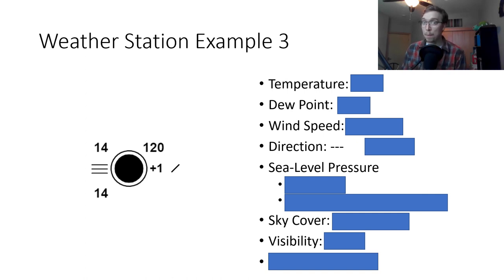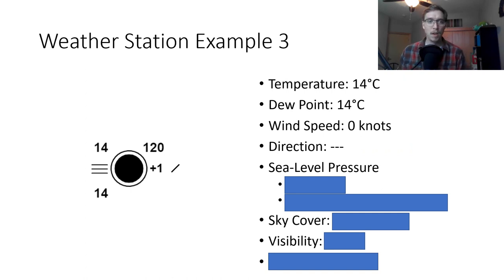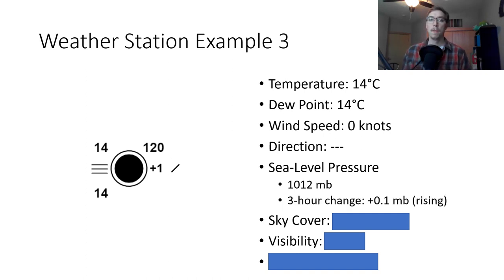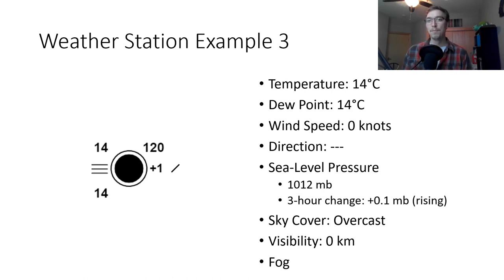Moving into our last one here. Go ahead and pause the video now and try and reason this one out. Temperature, 14 degrees Celsius. Dew point, also 14 degrees Celsius. Wind speed, zero knots. Direction, none. It is completely calm out right now. Zero knots and there's no barb basically saying that there is no wind and there's no direction the wind is coming from. Sea level pressure, 1012 millibars. Rising at a rate of 0.1 millibar per three hours. Sky cover, completely overcast. Visibility, nothing. Zero kilometers. And the current weather conditions: fog, dense fog.